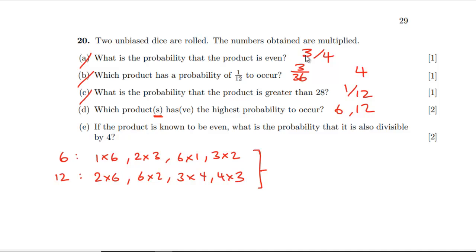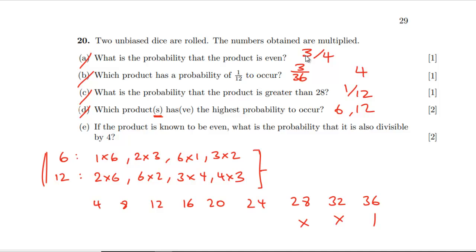If the product is known to be even, what is the probability that it is also divisible by four? We know the probability of even is three quarters, giving 27 outcomes. Counting ways to get multiples of four: 36 can be made one way, 24 in two ways, 20 in two ways, 16 in one way, 12 in four ways, eight in two ways, and four in three ways.